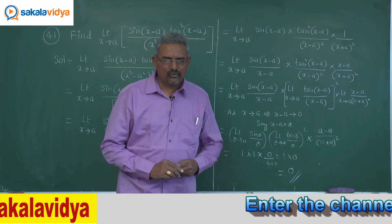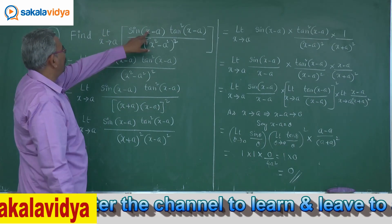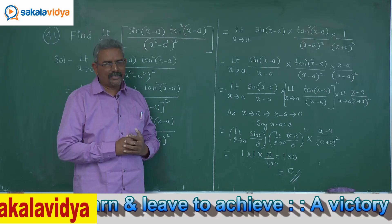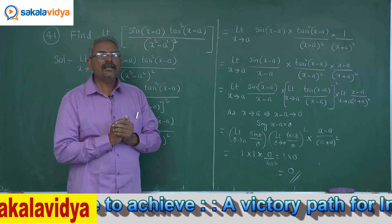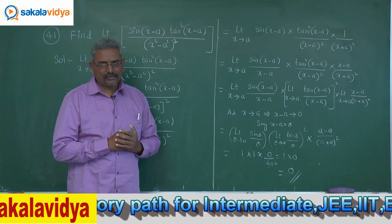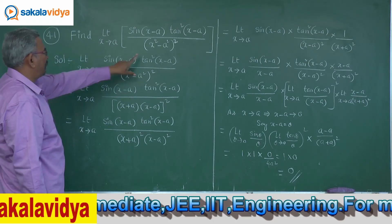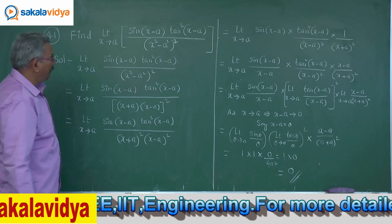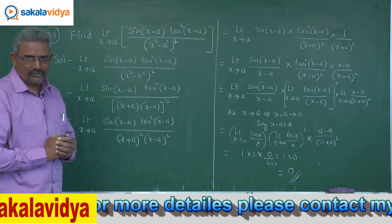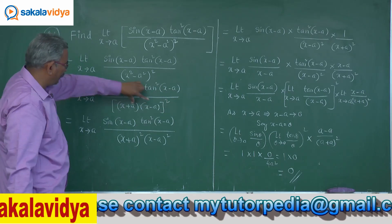Let me explain in Telugu medium also, the regional language. The limit x tends to a of sin(x minus a) times tan square(x minus a) by x square minus a square whole square. Now let us see what we have to do — the strategy is to write x square minus a square using sin theta by theta and tan theta by theta. The second step: the limit x tends to a of sin(x minus a) times tan square(x minus a) divided by (x plus a) into (x minus a), whole square.